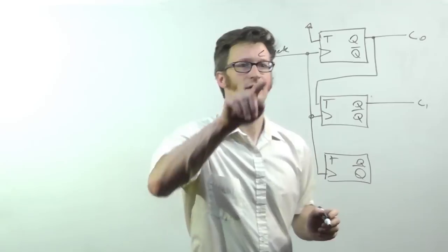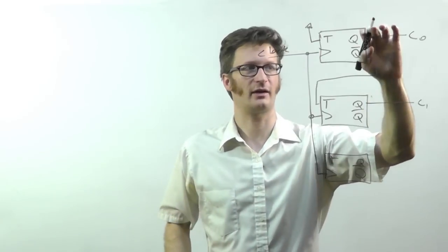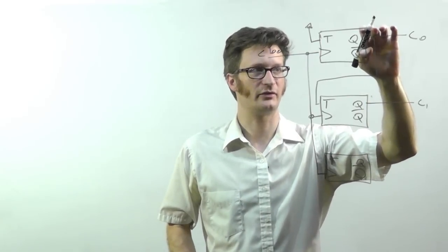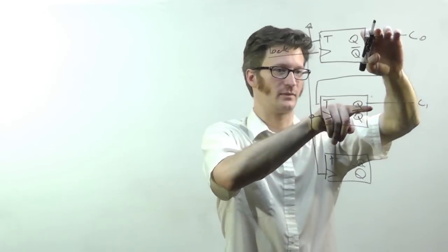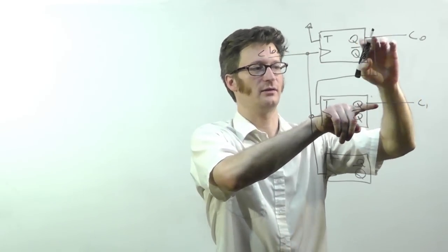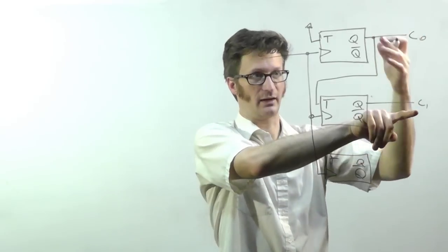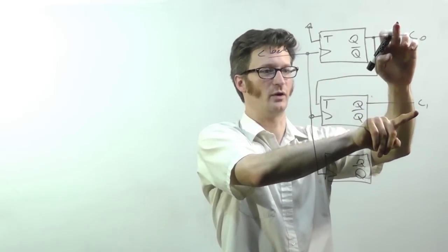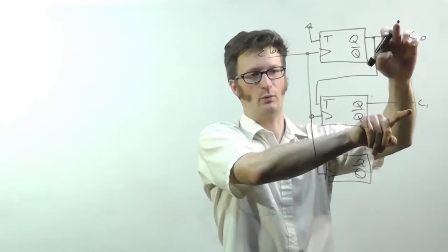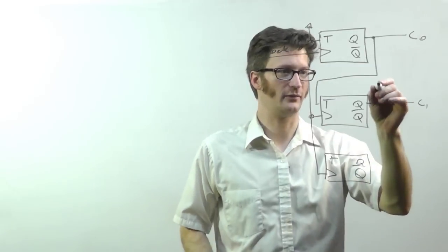So let's look at what happens here. This one will toggle every time. So it starts out at zero. Then it goes to one. When it gets to one, it toggles, which toggles this one. So this becomes one zero on the next clock. And then on the next clock, this becomes one. This stays at one because it was previously getting a zero and so on and so forth.